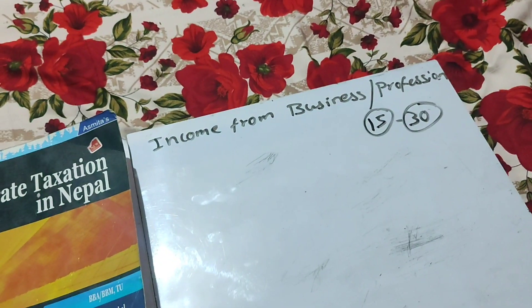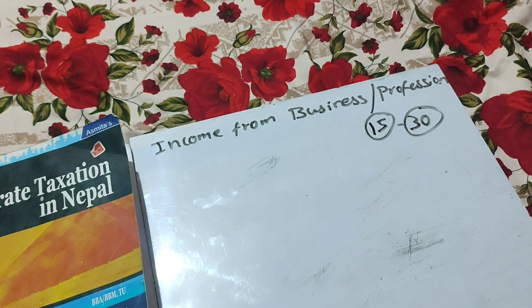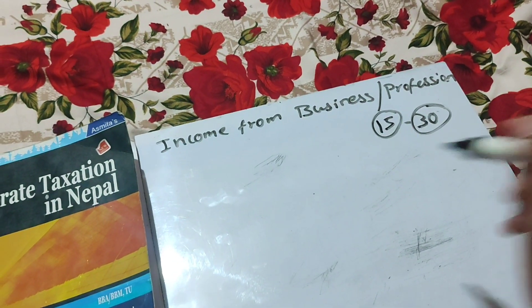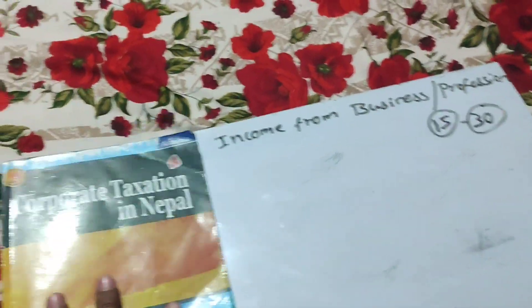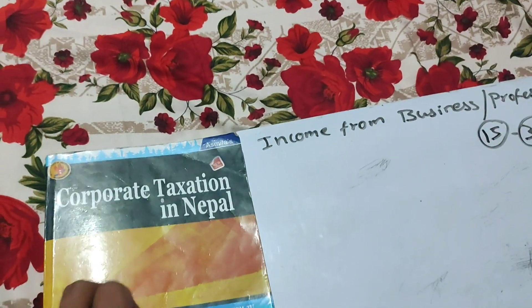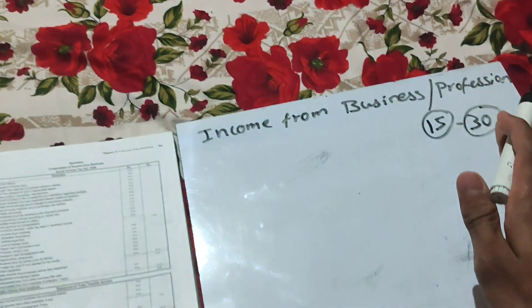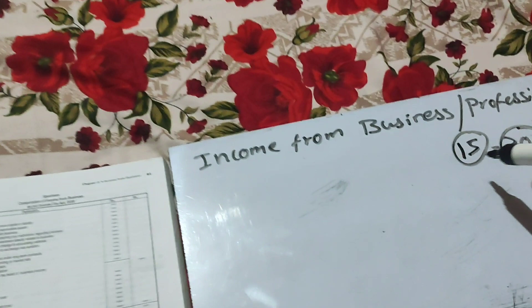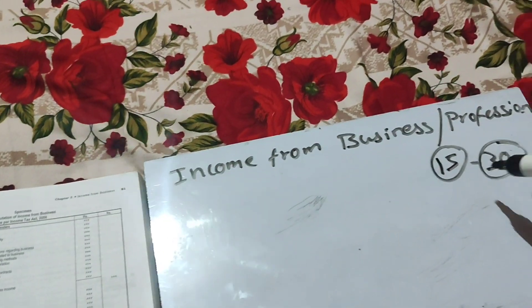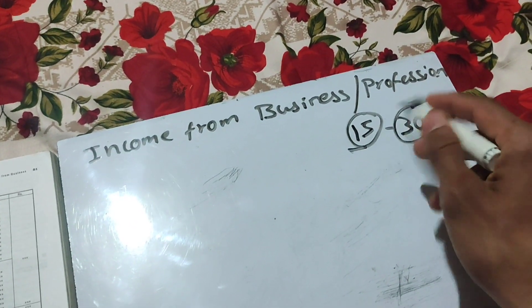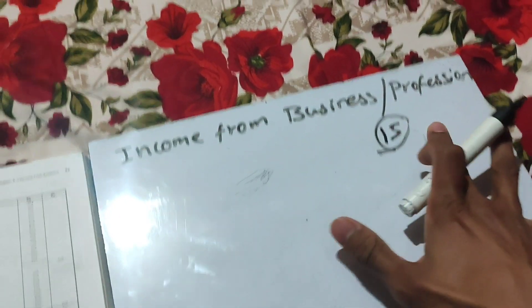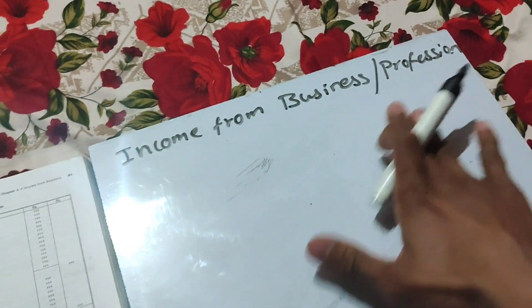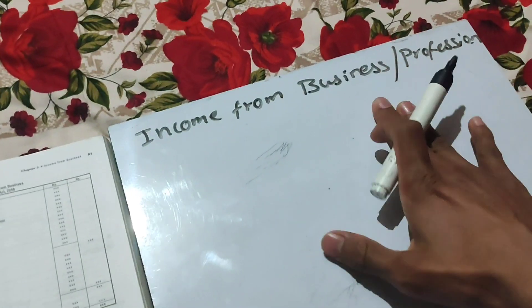Welcome back to Ujjal Kaftery Tricks. Today we are studying about income from business or profession. This is an important chapter in corporate taxation in Nepal. In BBA it generally carries 15 marks, and it is also very important in BBM. For BBS third year students this is also a very important chapter.